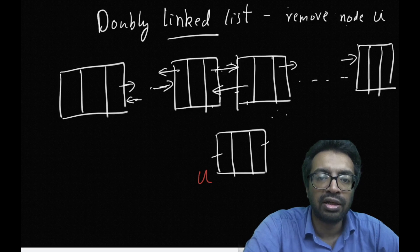What is the reason? The reason is that in a singly linked list, if someone gives me a node U, I don't know which was its previous node. That's the main catch.